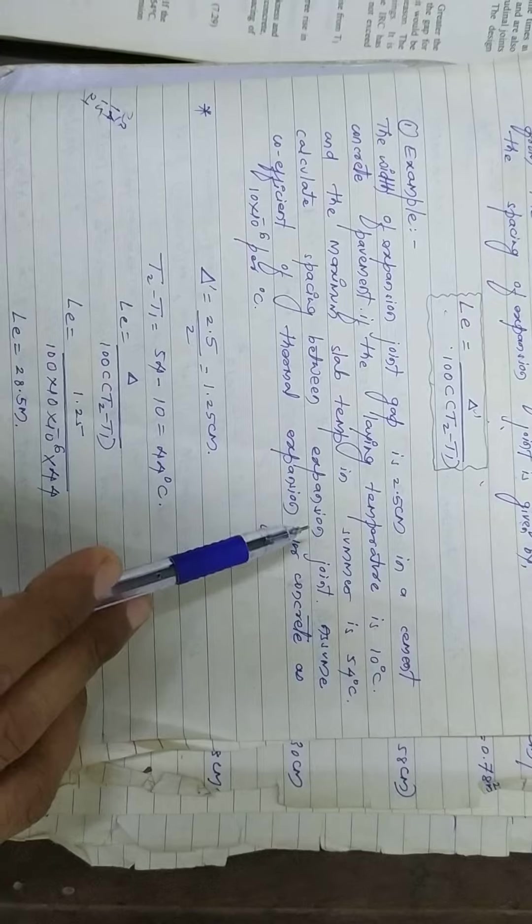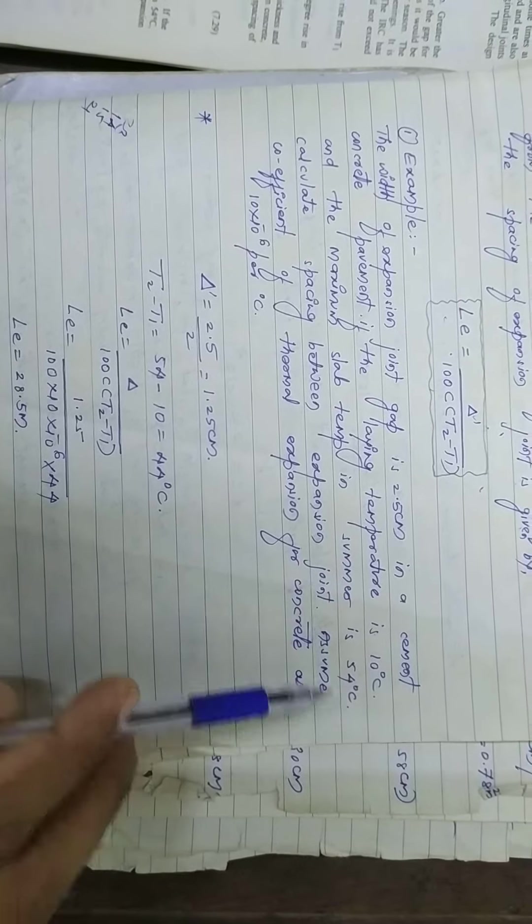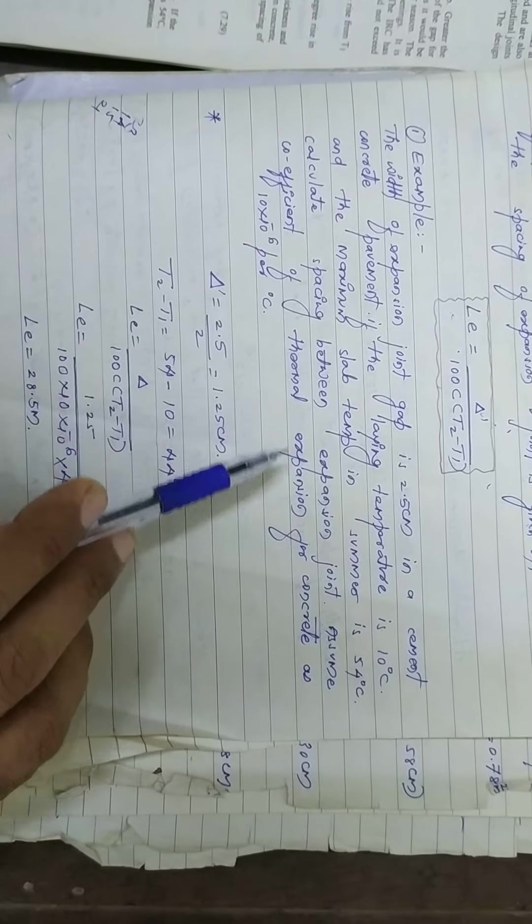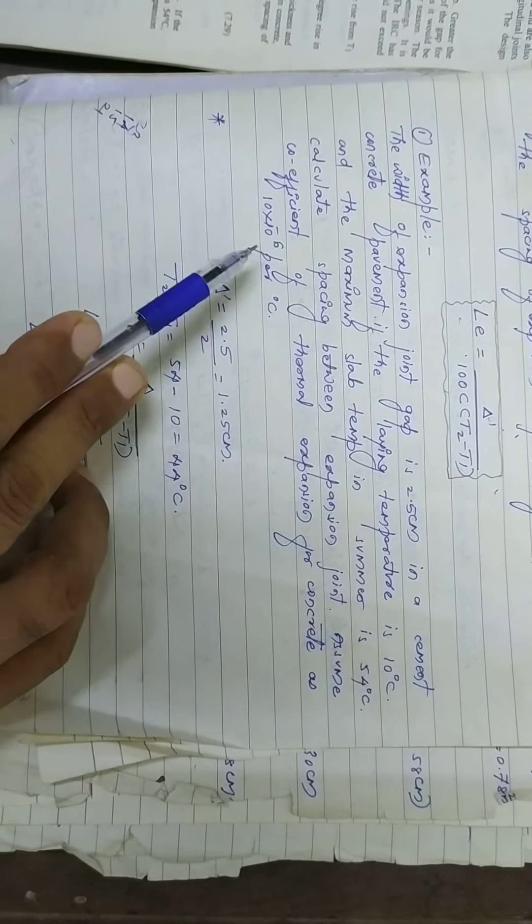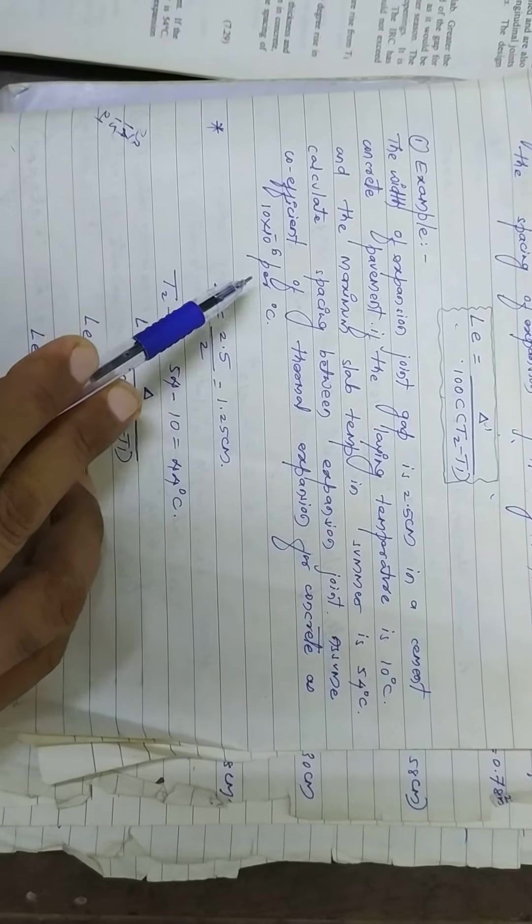Assume coefficient of thermal expansion for concrete is 10 into 10 to the power of minus 6 per degree centigrade.